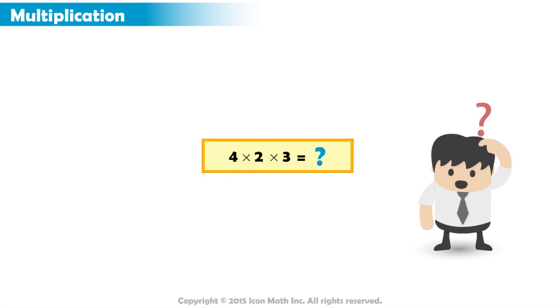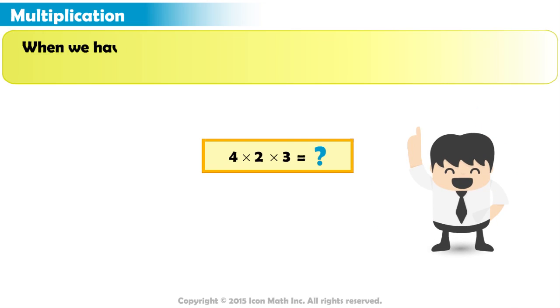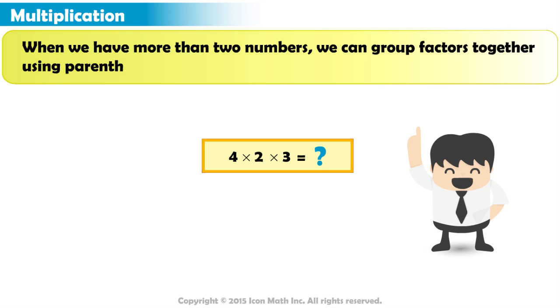What is the product of four times two times three? When we have more than two numbers, we can group factors together using parentheses. This makes it easier to read and find its value.